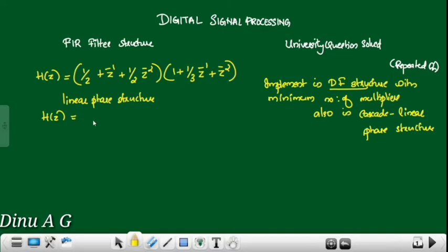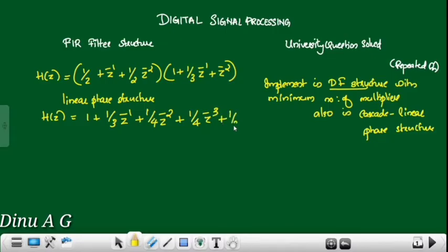That means we will get it as: 1 plus 1/3 z raised to minus 1 plus 1/4 z raised to minus 2 plus 1/4 z raised to minus 3 plus 1/3 z raised to minus 4 plus z raised to minus 5.